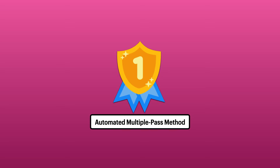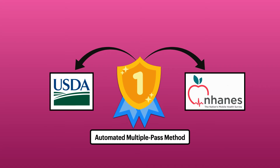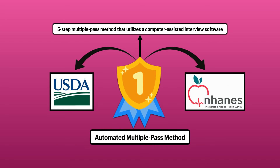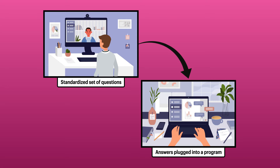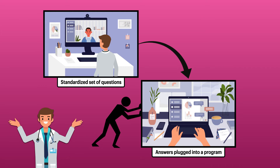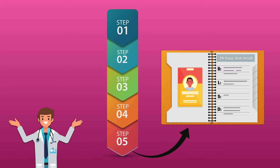The gold standard for the multiple-pass method is the automated multiple-pass method. This is what the United States Department of Agriculture uses to collect data for the National Health and Nutrition Examination Survey. It's a five-step multiple-pass method that uses a computer-assisted interview software. The interviewer is guided by a standardized set of questions, and the answers provided by the respondent are plugged into a program on a computer or tablet. That program optimizes the quantity and quality of the details obtained. Although most dieticians don't have access to this technology, the five steps can be applied to produce a 24-hour recall that's still comprehensive.